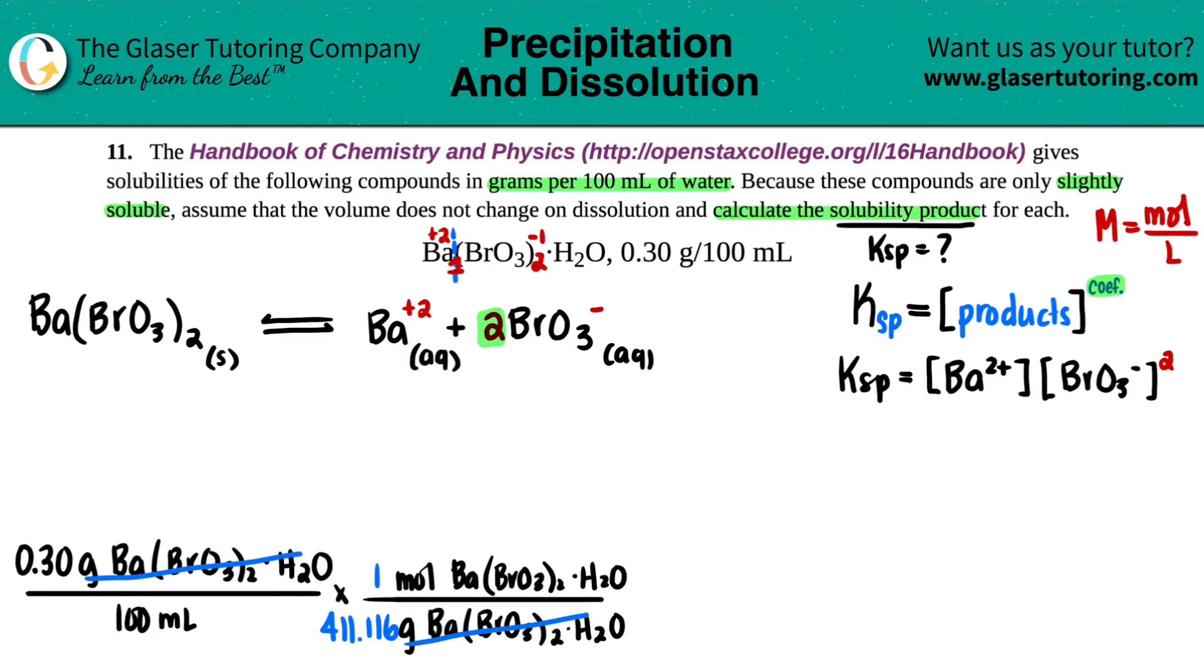Now let's convert milliliters into liters that we need for molarity. So times by the ratio. In this case, we're going to put milliliters on the top because we want to cancel them. Liters go on the bottom. 1,000 milliliters for every one liter. Milliliters will cancel. And now we're left with liters.